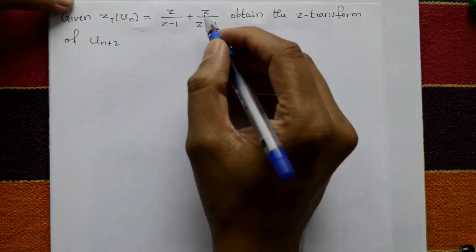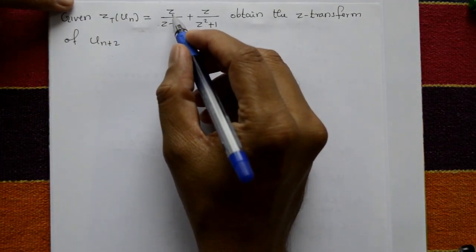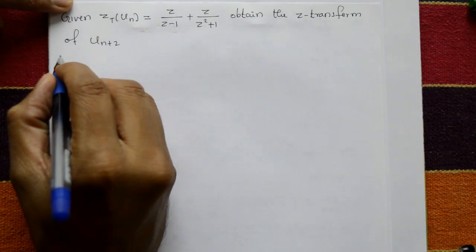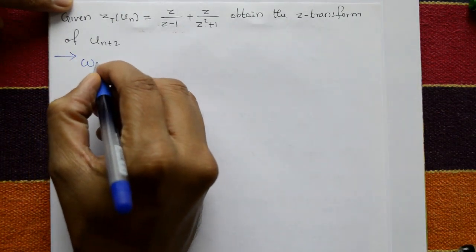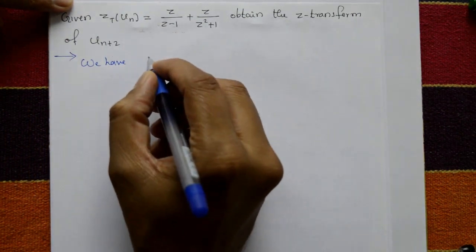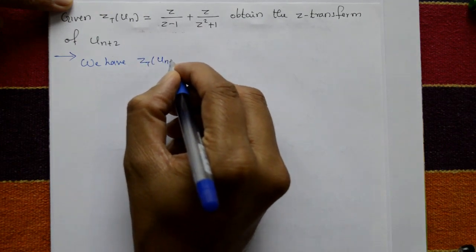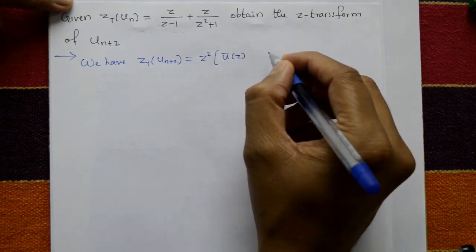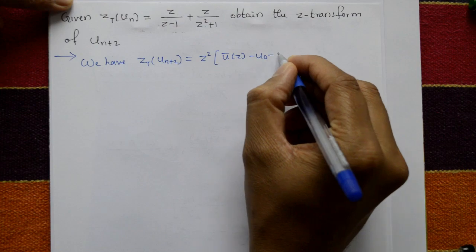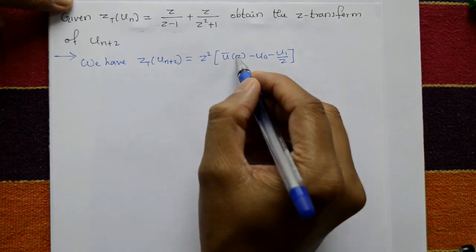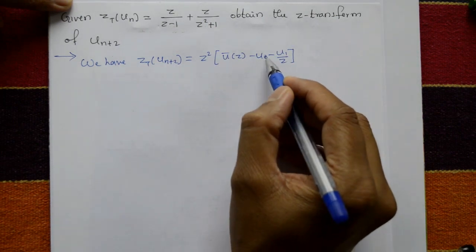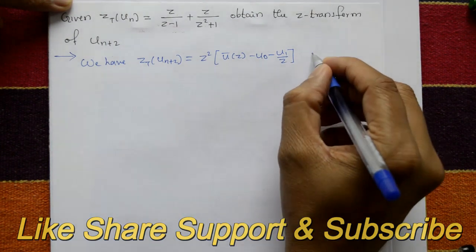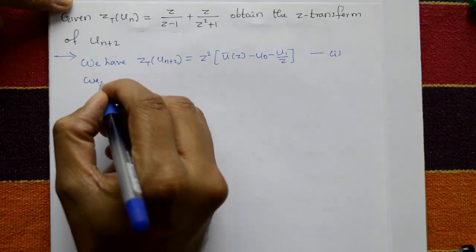Given the Z-transform of u(n) is equal to z/(z-1) plus z/(z²+1), obtain the Z-transform of u(n+2). Now, Z{u(n+2)} is equal to z² · Ū(z) minus u(0) minus u(1)/z. Here, Ū(z) is given. This is equation number one. We shall compute first.